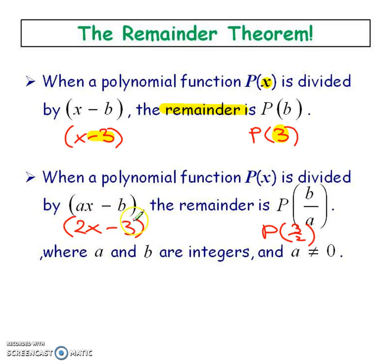Now what happens if you have a more complicated divisor? That's fine. Again what you're going to do is take the opposite of this number. You got your 3. Take the opposite of 2 multiplying your x and you're going to have a division by 2. So 3 over 2. Take that and sub it wherever you see an x inside P(x). Then you're going to get your remainder once you simplify.